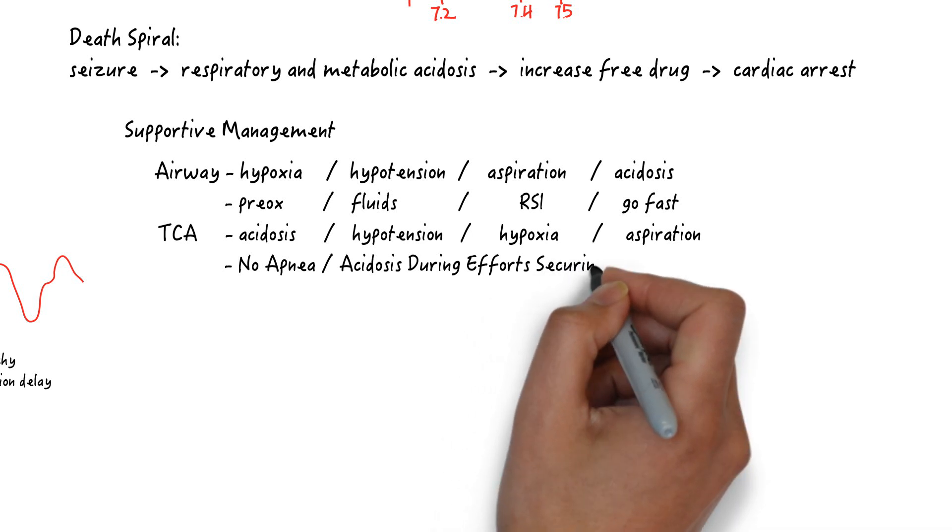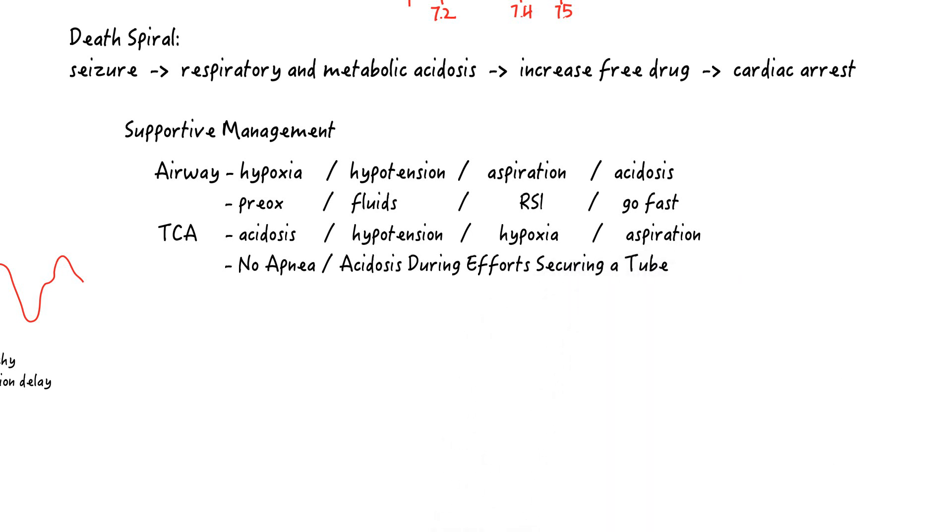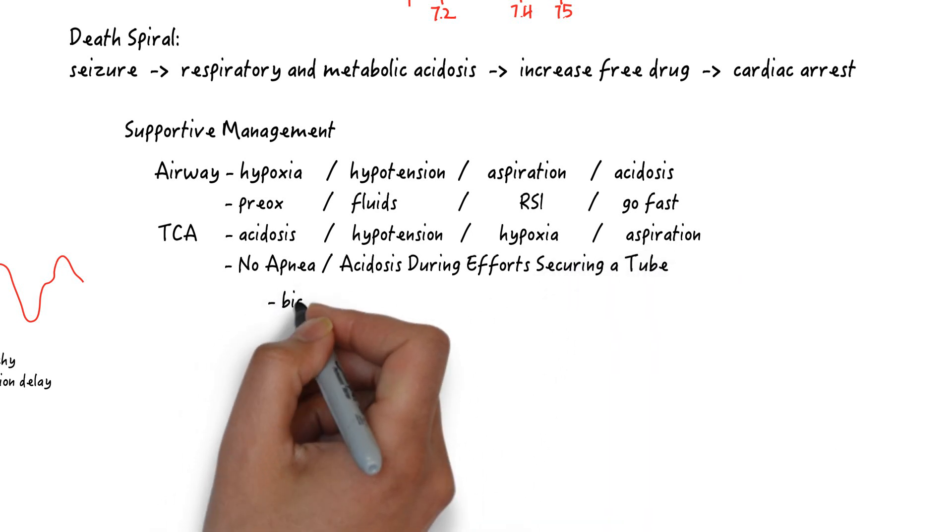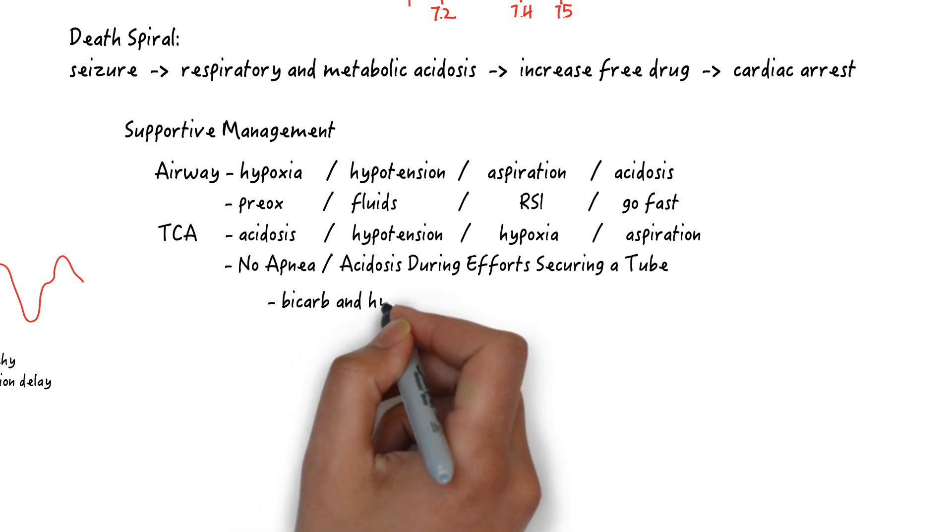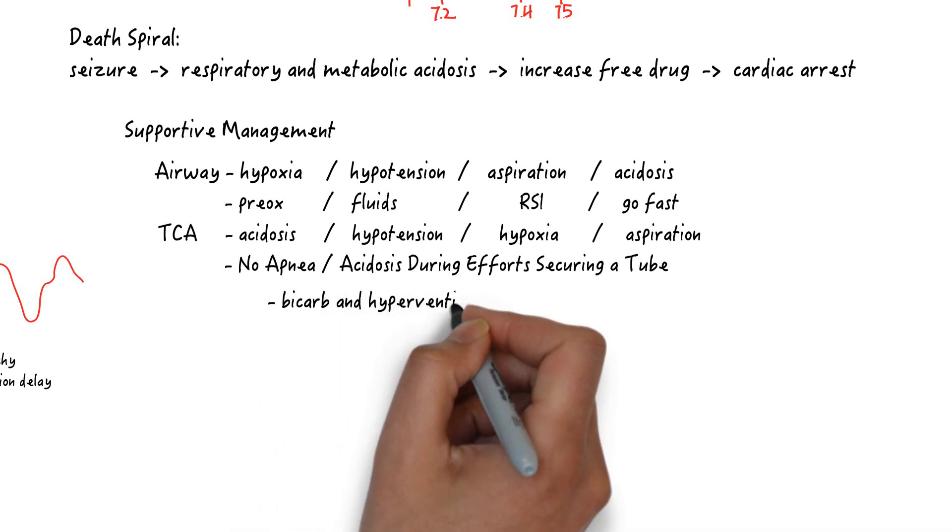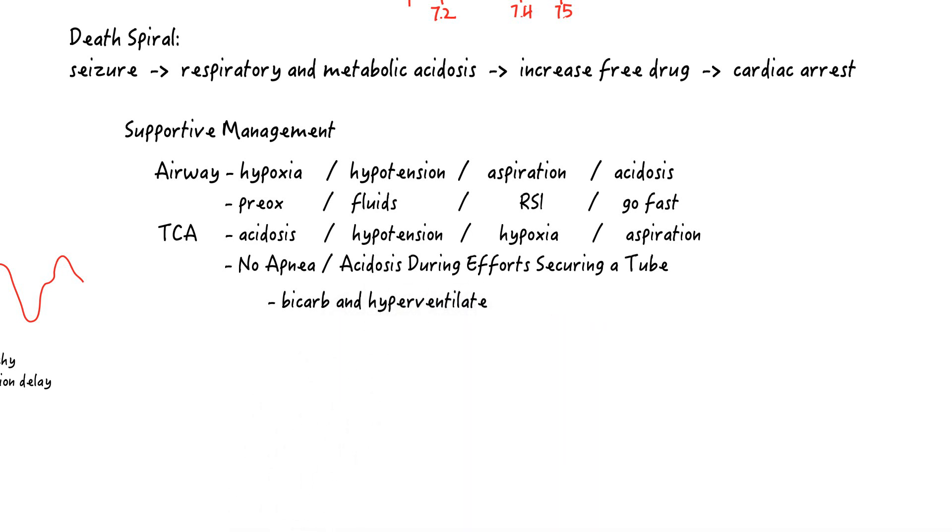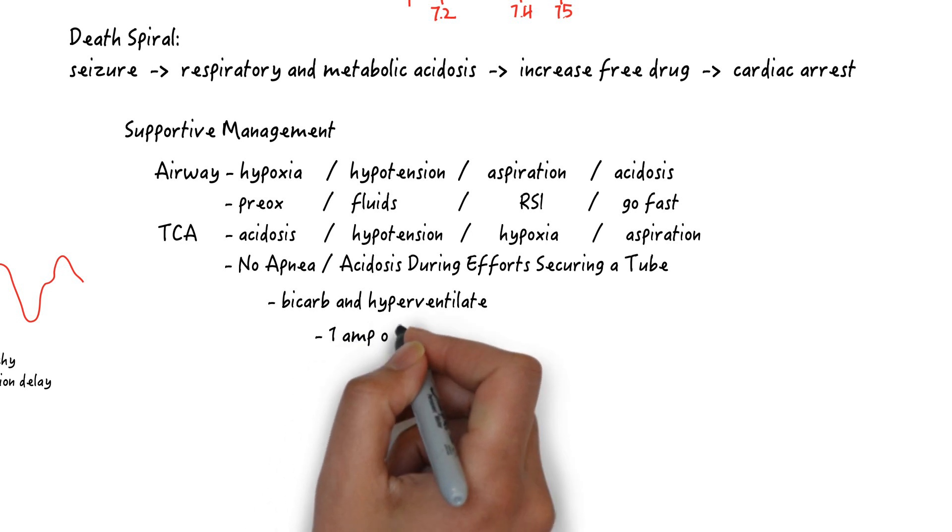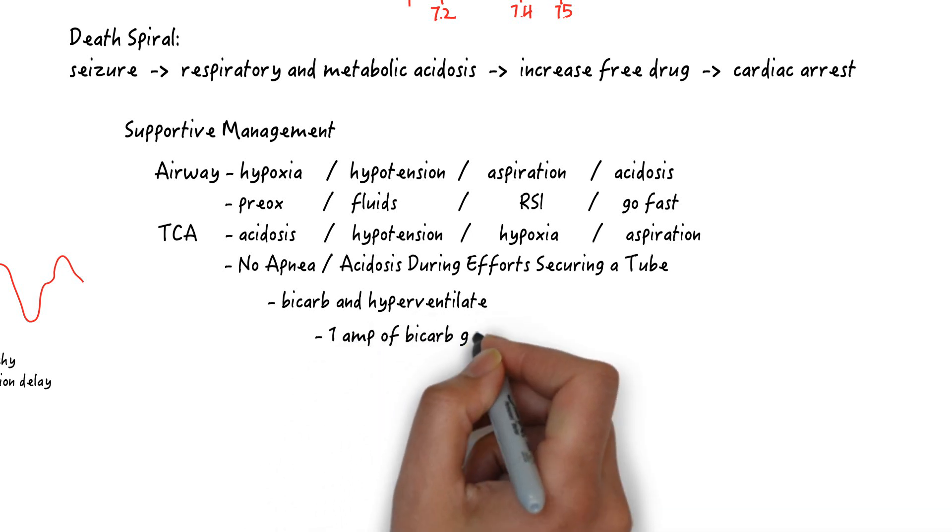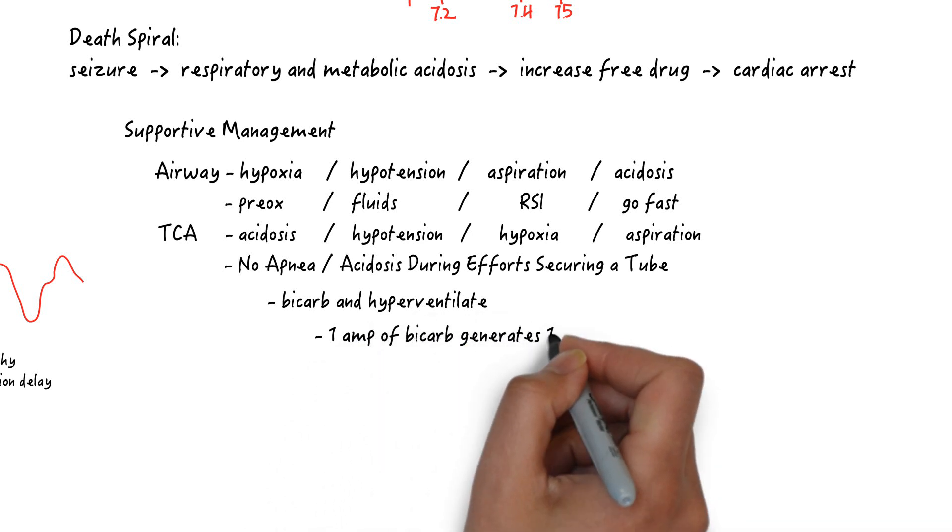You have a couple of options. You can pre-treat with 2-3 amps of sodium bicarbonate. Remember that bicarb itself has limited alkalinizing effects if the lungs do not adjust for the resulting increase in pCO2. One amp of bicarb generates a liter of carbon dioxide.